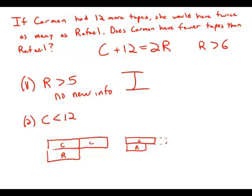Whereas if Carmen has fewer tapes than Raphael, then to get up to twice the number of tapes of Raphael, she would have to add more than her current number.